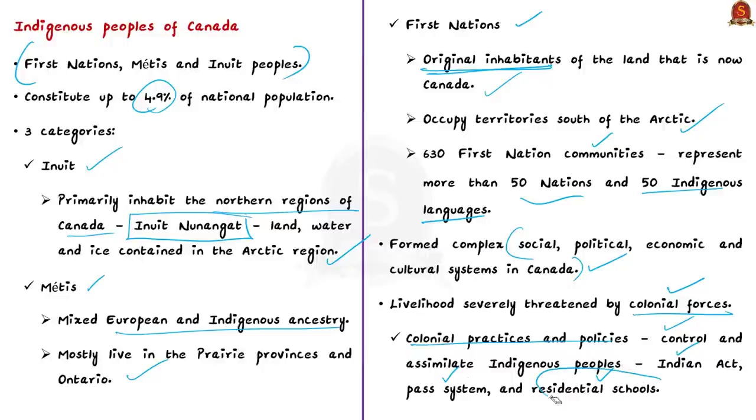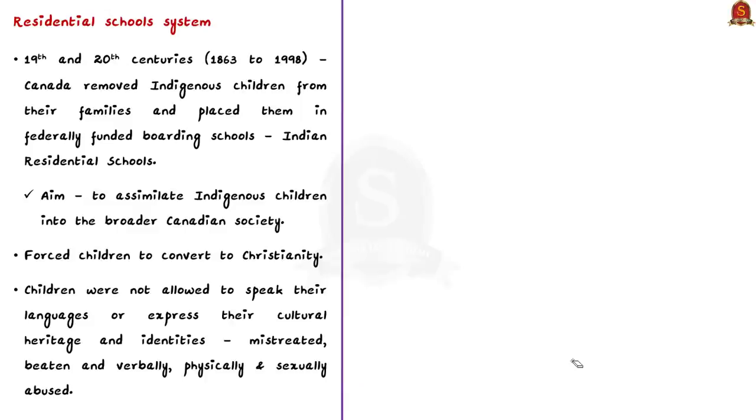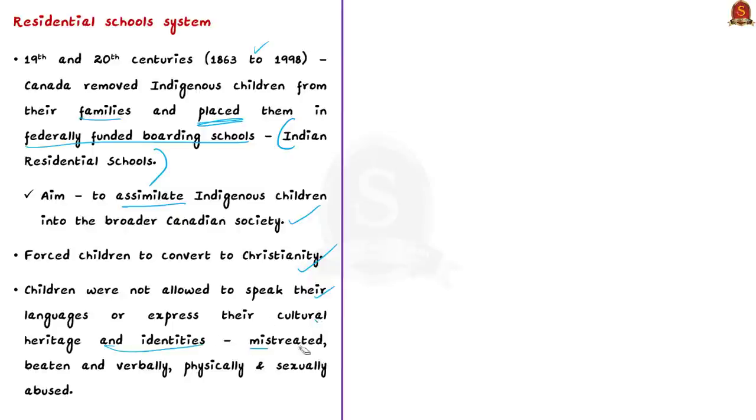Today we focus on the residential school system. During the 19th and 20th centuries, approximately from 1863 to 1998, Canada removed indigenous children — especially First Nations children — from their families and placed them in federally funded boarding schools. This was done with the intent of assimilating indigenous children into the broader Canadian society. These schools were called Indian residential schools. Rather than educating the children, they were compulsorily made to abandon their Aboriginal identity. Children were forced to convert to Christianity, not allowed to speak their languages or express their cultural heritage and identities, and were mistreated, beaten, verbally abused, and subjected to physical and sexual abuse.